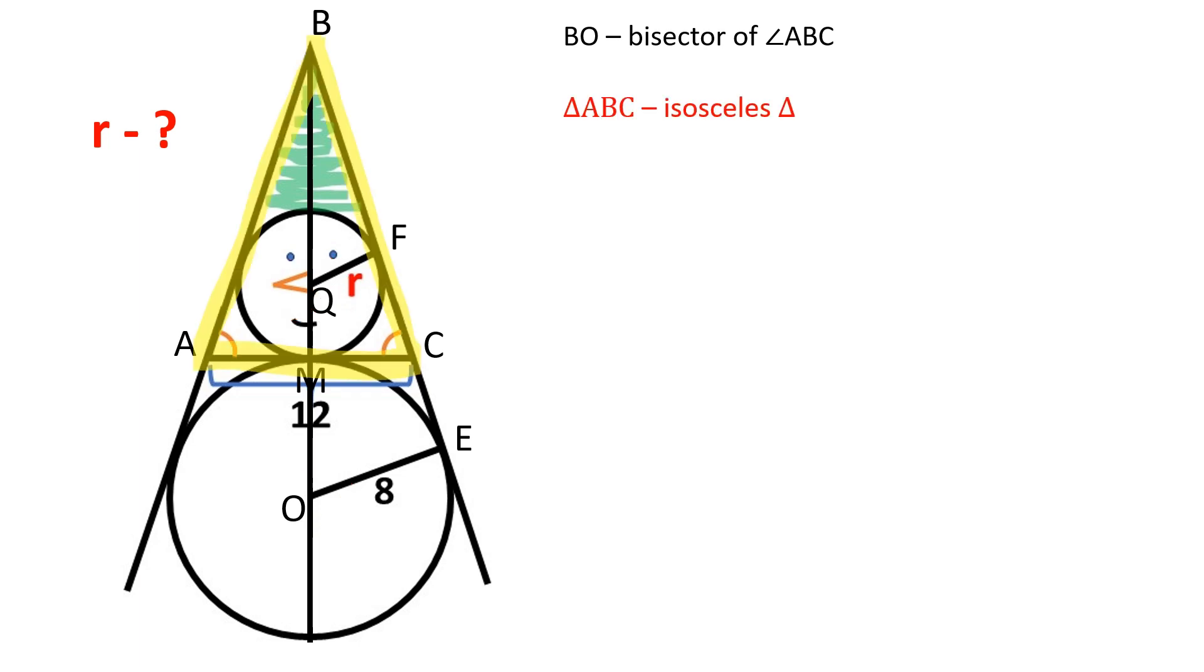Triangle ABC is an isosceles triangle. BM is also the median and the altitude. AM is equal to MC and equals 6.